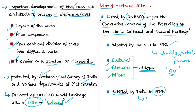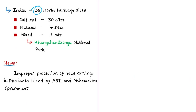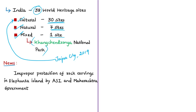India ratified this convention in 1977 and is therefore a state party. India is expected to protect the heritage values of listed properties and report periodically to UNESCO on their condition. India currently has 38 World Heritage Sites in total — 30 under the cultural category, 7 under the natural category, and 1 under the mixed heritage category, which is the Khangchendzonga National Park. The last addition to India's World Heritage Sites list was the City of Jaipur, added in 2019 under the cultural category.